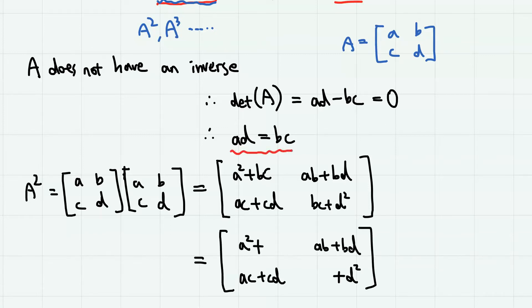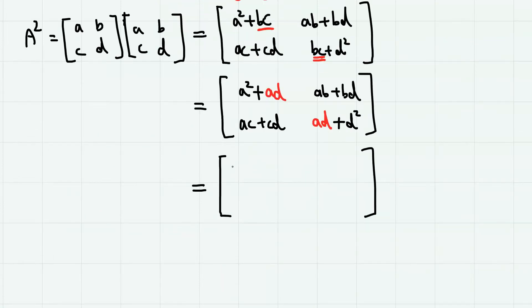Now let's use this equality, and we replace this BC as AD as well. Then we have A plus D times A here, A plus D times B here, A plus D times C here, and A plus D times D here.